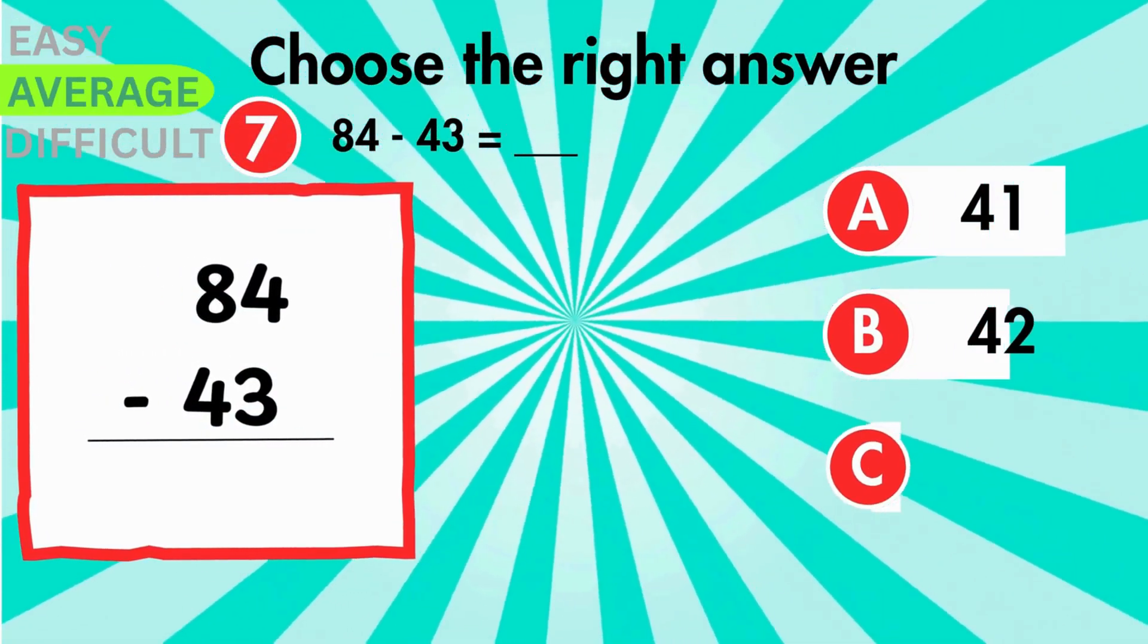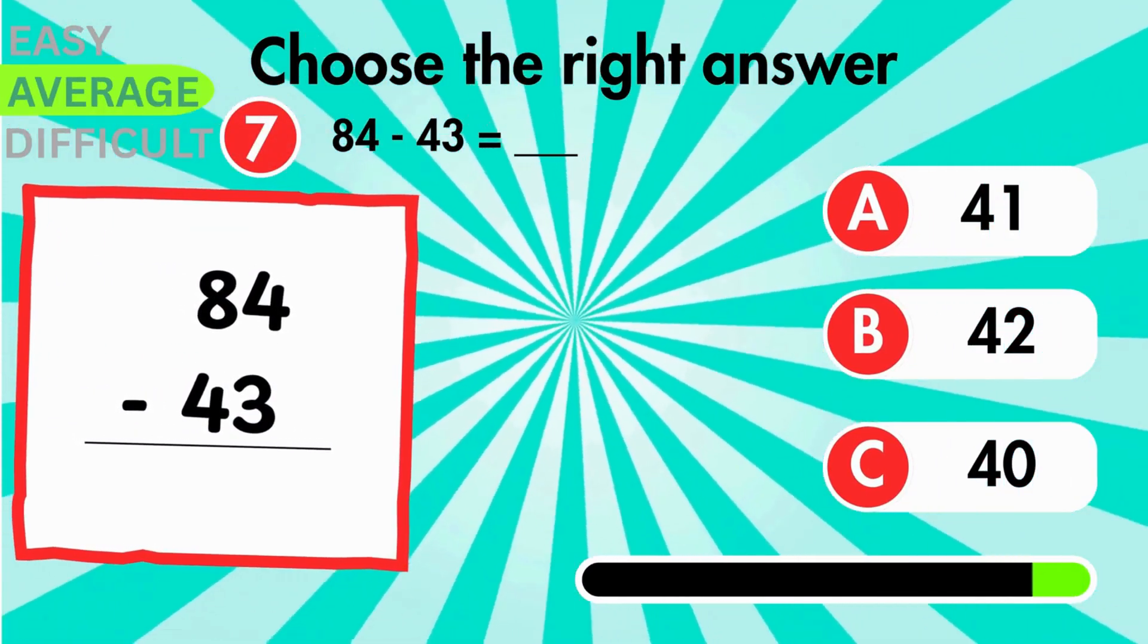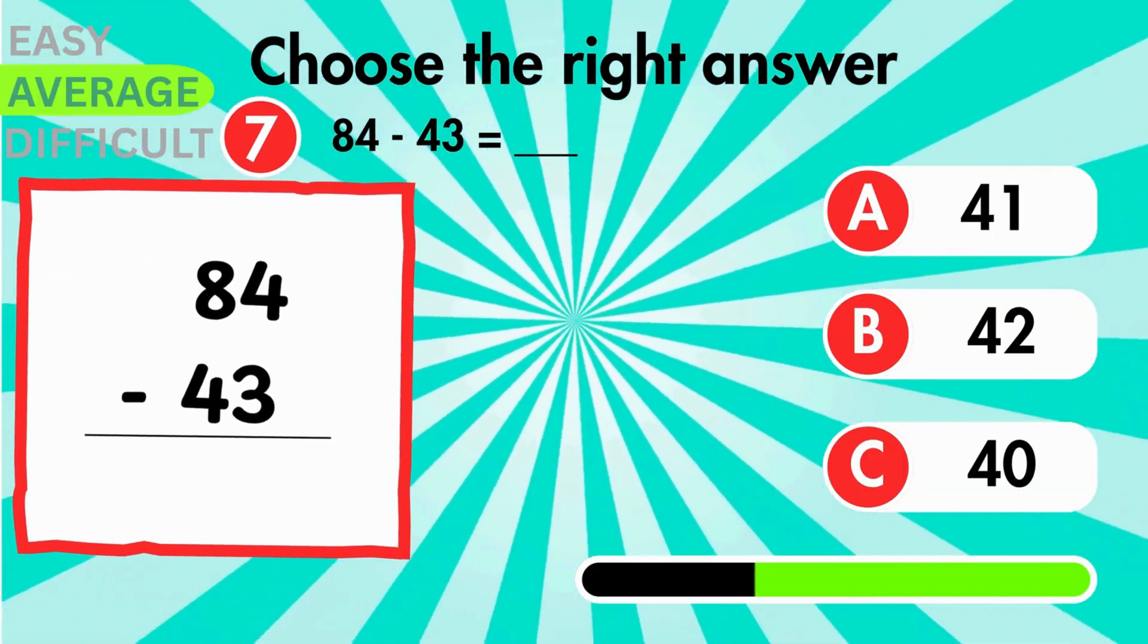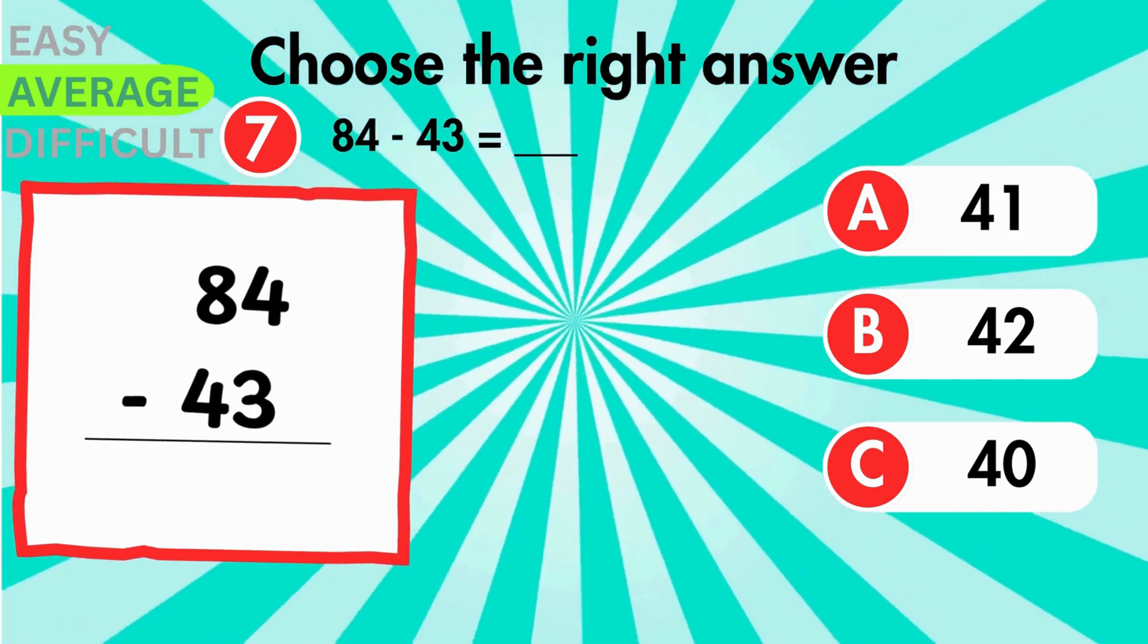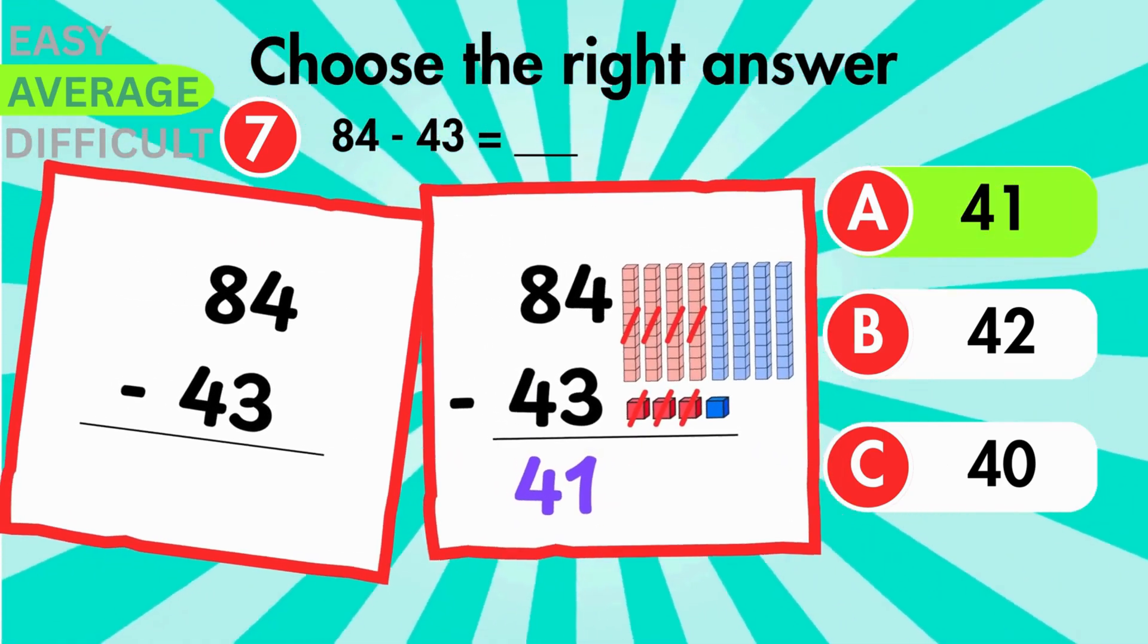Take 43 away from 84. What do you get? You get 41.